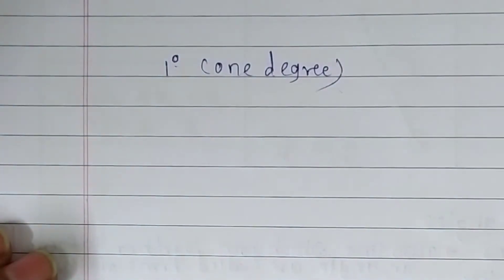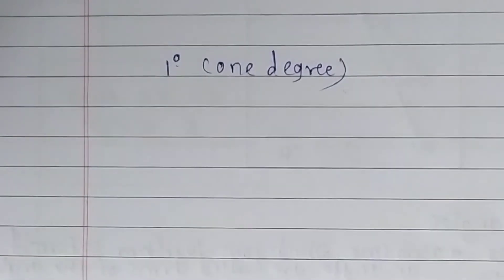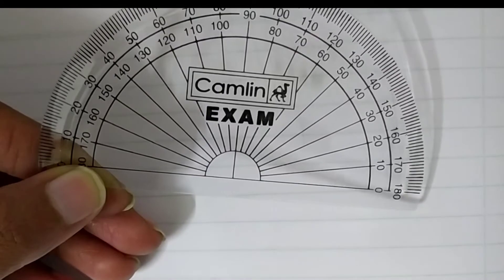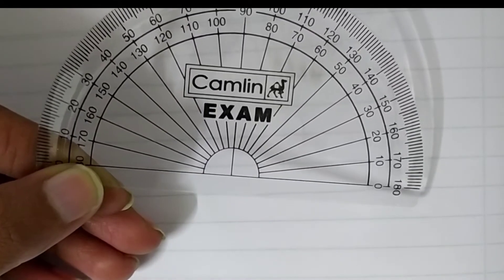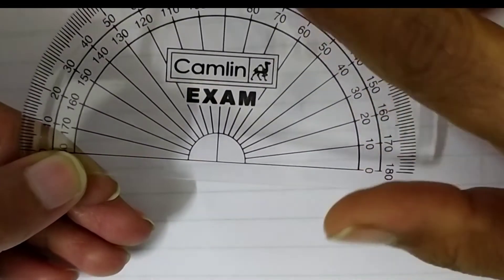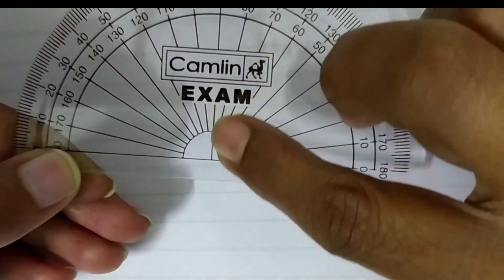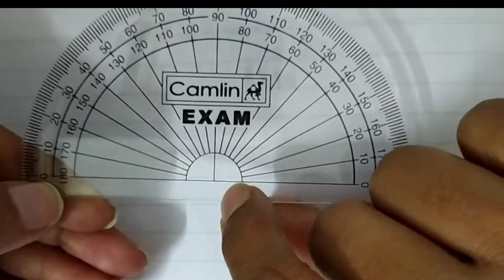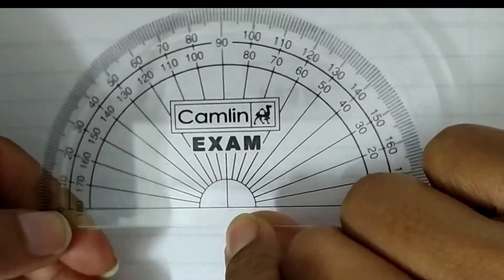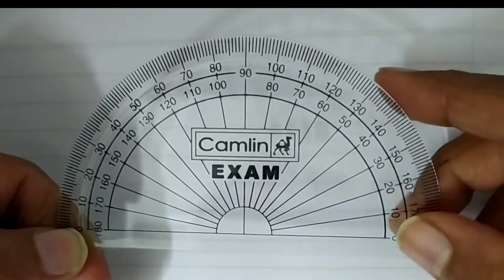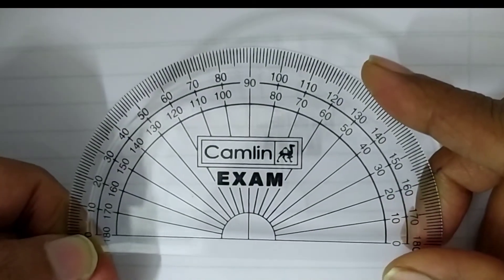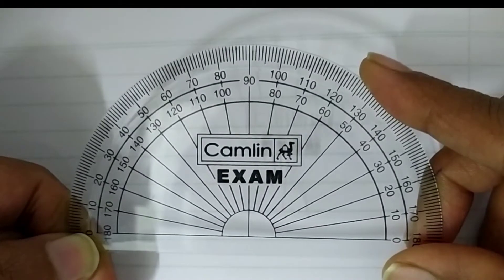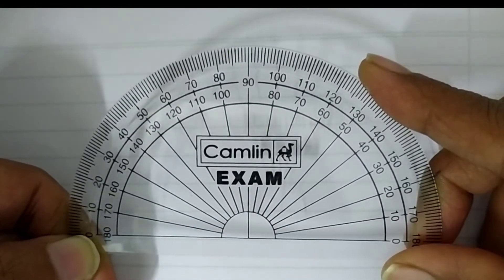Now let's turn towards our protractor. The center of the circle of which the protractor is a half part — we can see here, this is the center of the protractor. It's very important for us to know the center of the protractor because when we draw angles, we have to use the center of the protractor.